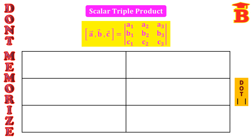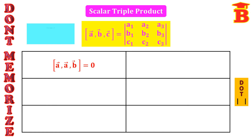Now let us see the important results. The first result: box product of [A, A, B] equals 0. That means if any two vectors are the same inside the box product, then the answer is 0. Since it is a determinant formula, if two rows are the same, the determinant value is 0 — and that is why the box product equals 0.